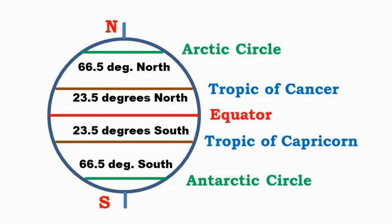The latitude at 23.5 degrees north is known as the Tropic of Cancer. The latitude at 23.5 degrees south is known as the Tropic of Capricorn. The latitude at 66.5 degrees north is known as the Arctic Circle. The latitude at 66.5 degrees south is known as the Antarctic Circle.